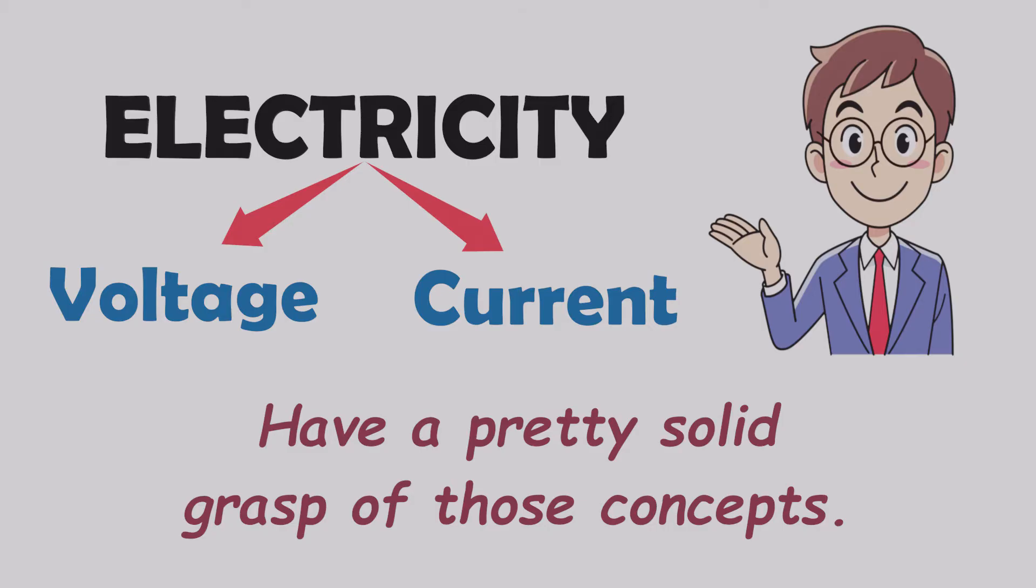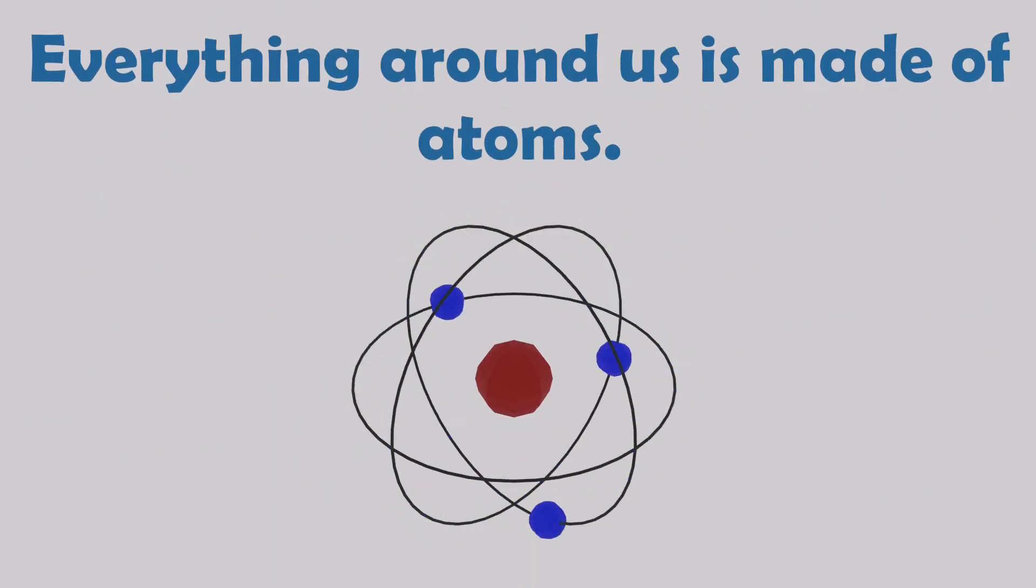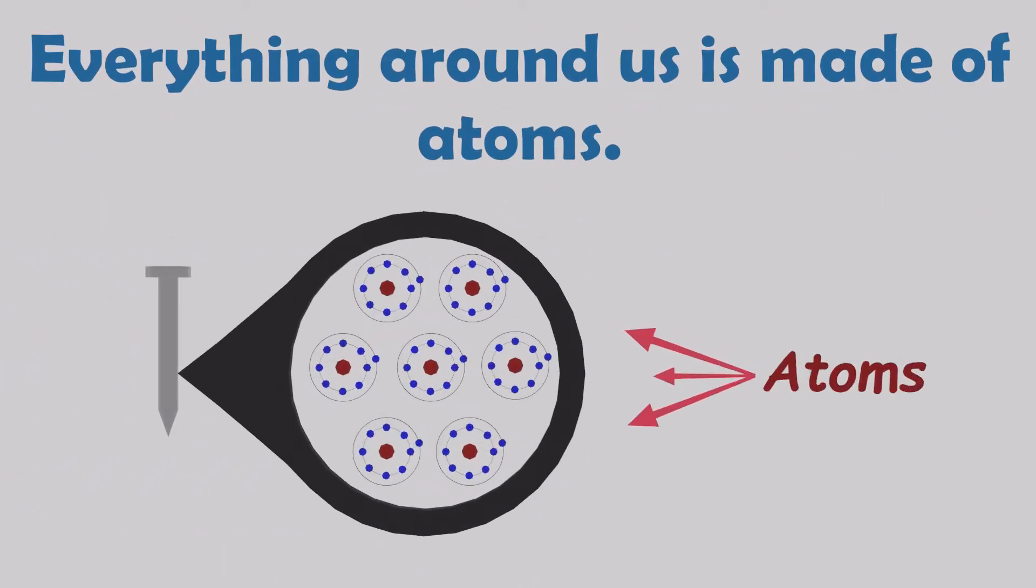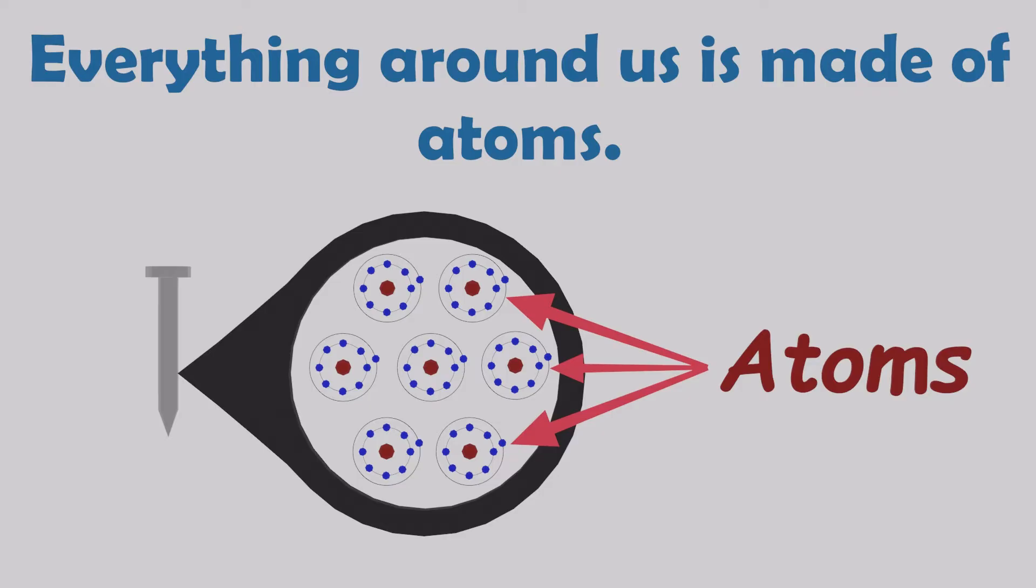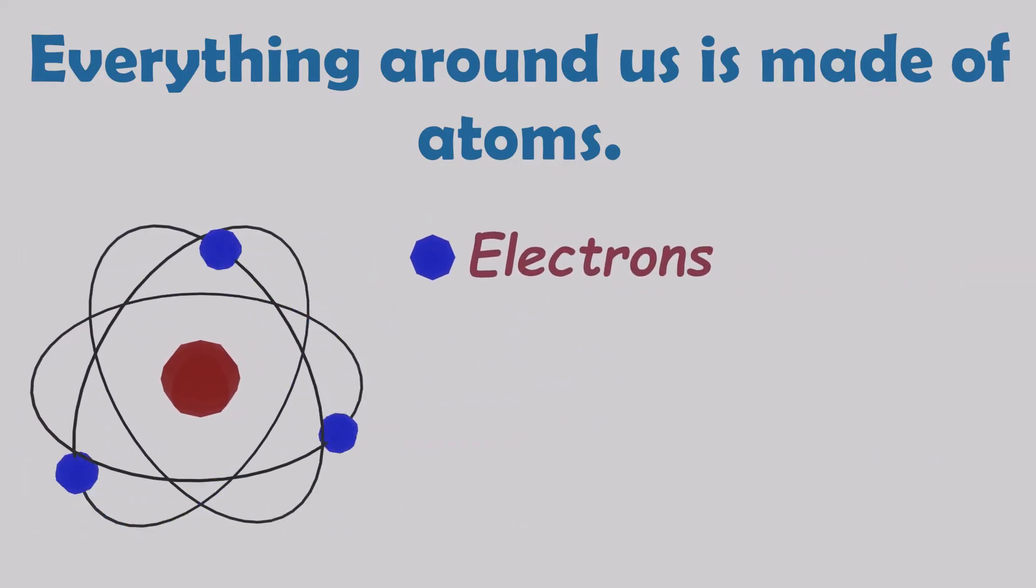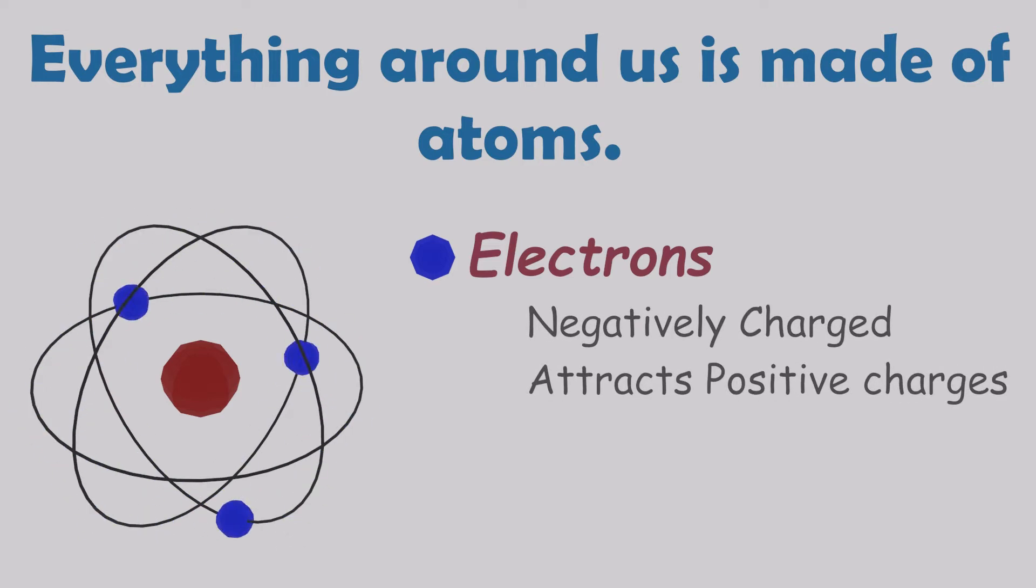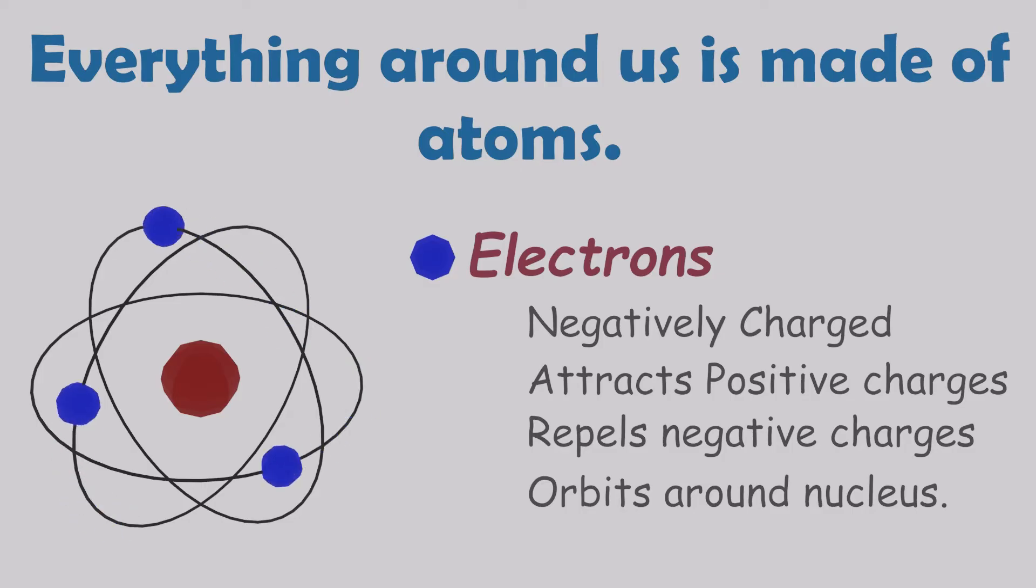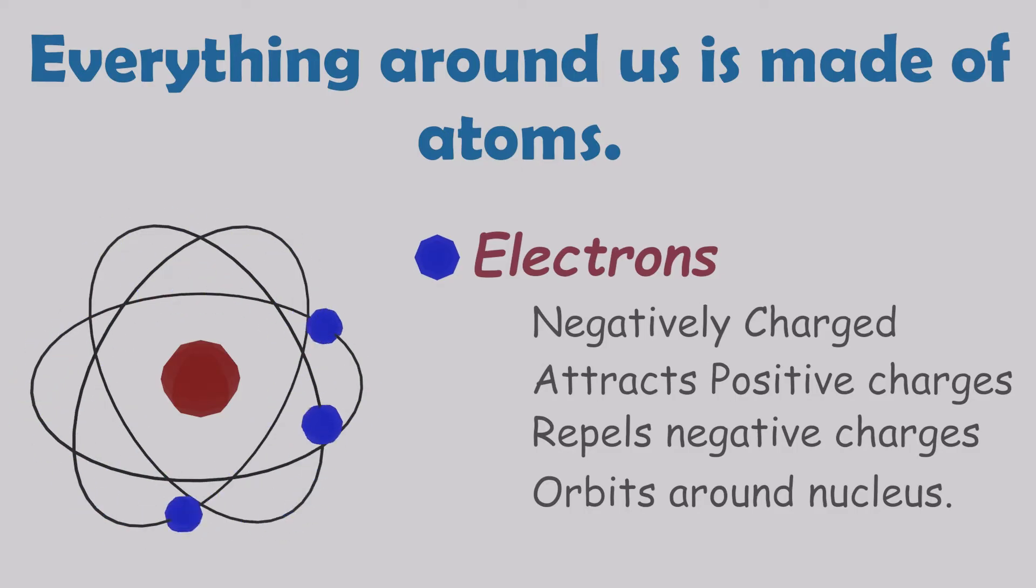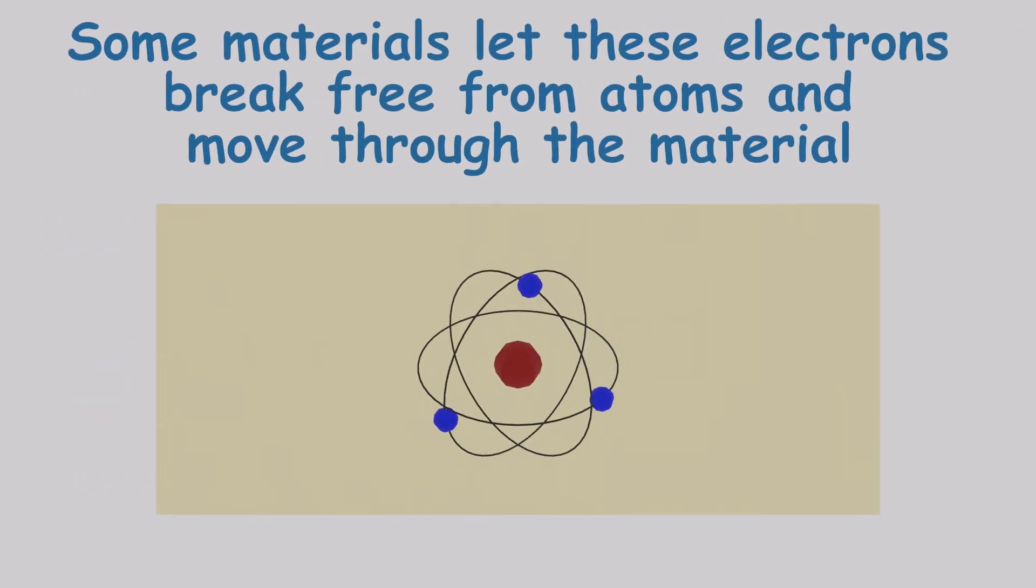Everything around us is made of atoms. There can be millions of atoms in a tiny pinhead. Atoms contain electrons. Electrons are negatively charged, so they attract the positive charges and repel the negative charges. Usually electrons are orbiting around the nucleus of the atom. That's the fundamental nature of an electron.